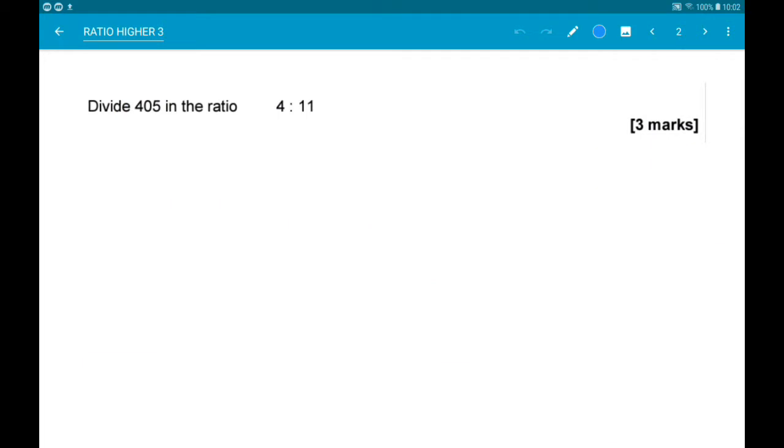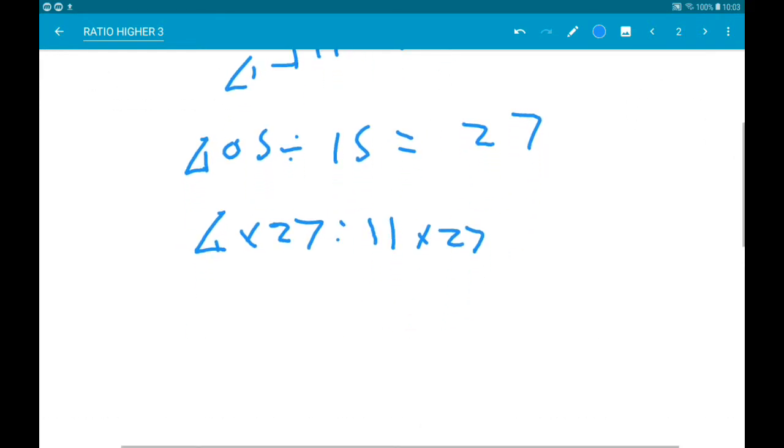Okay then, first step, divide 405 in the ratio 4 to 11. First step, add parts of the ratio. So 4 and 11 is 15. We then need to know how many times that goes into 405. So 405 divided by 15 is gonna give us 27, and then multiply each side of the ratio by 27. So we get 4 times 27 to 11 times 27. So 4 times 27 is 108, and 11 times 27 is 297.